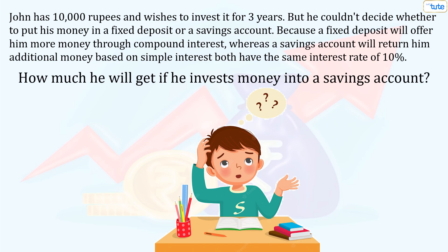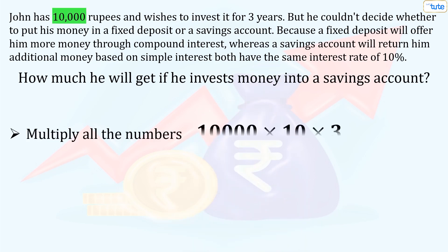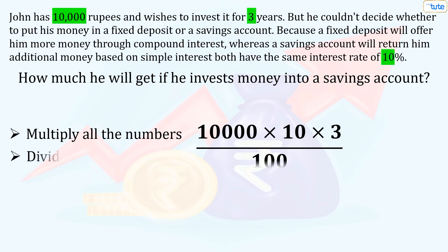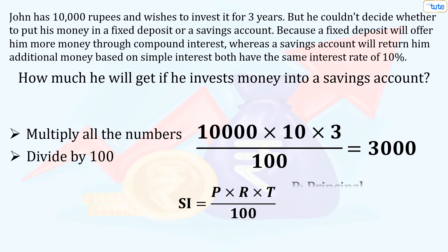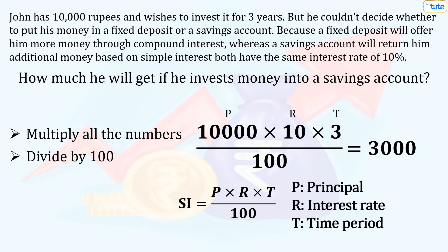This is very simple. All we have to do is multiply all of the given numbers and then divide by 100. If John deposits his money in a savings account for 3 years, he will receive an additional 3,000 rupees. This is just the simple interest formula, where P represents the principal, R is the interest rate, and T is the time period.